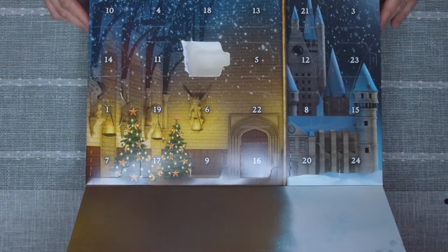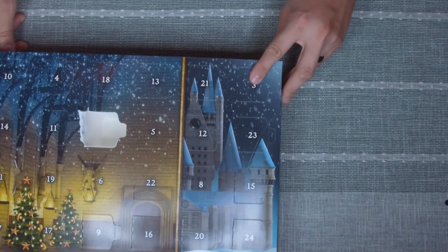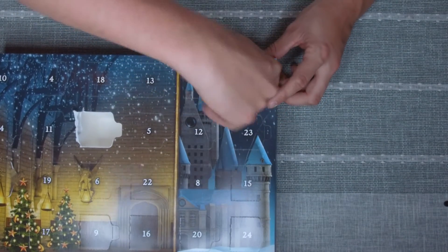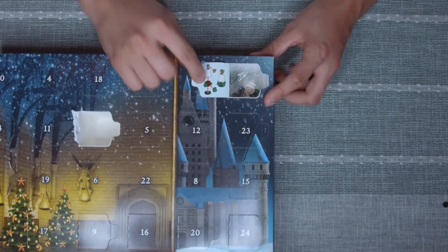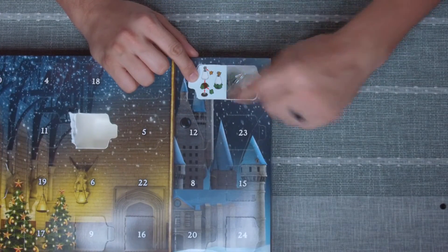You see here, we have day three up in the top corner. We're going to push the tab in, pull out the window. As you can see, it looks like it's two small Christmas tree sets.